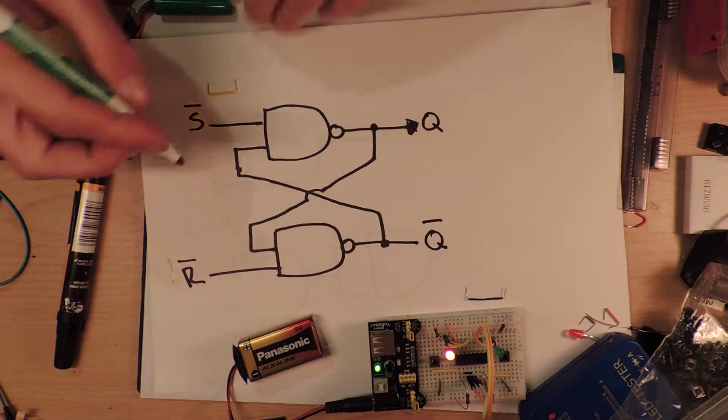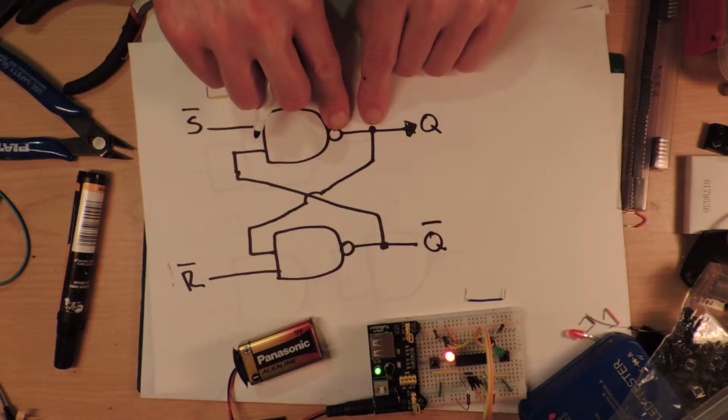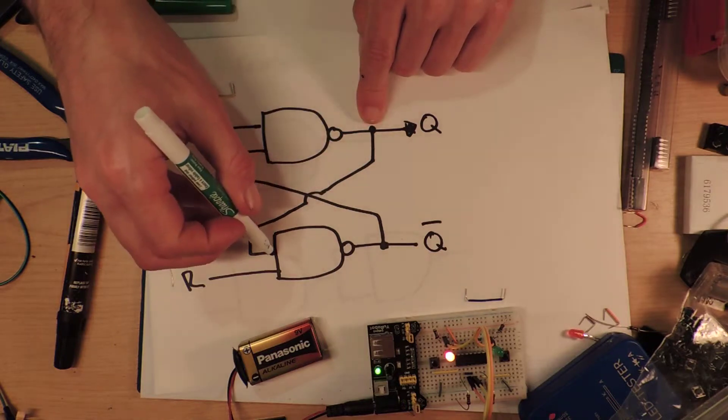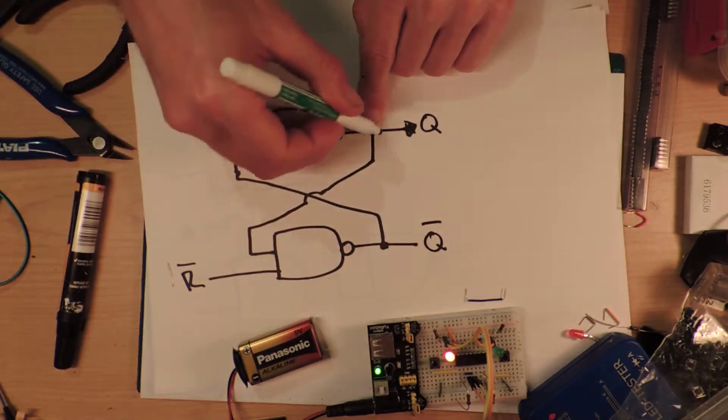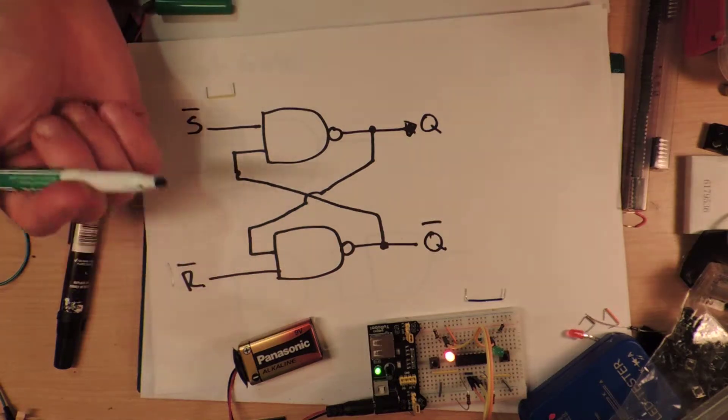So you get this stable state. So if this starts off being high, that makes that low, that goes low, low makes this high, and you're in a stable state.